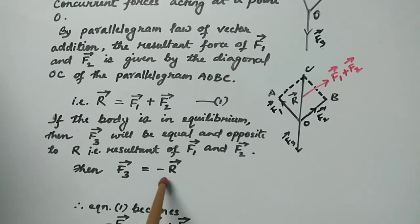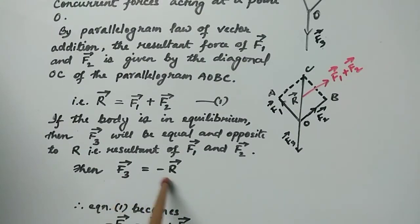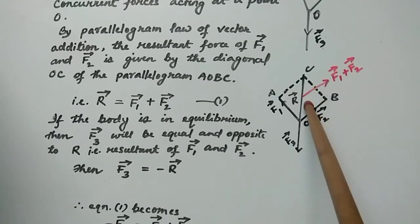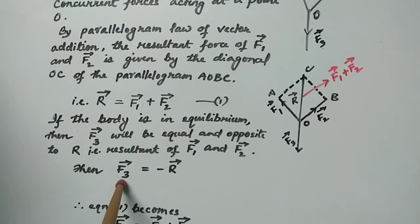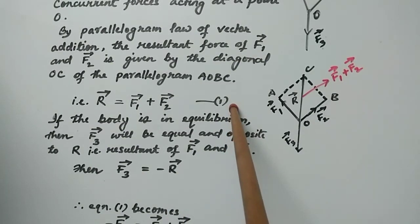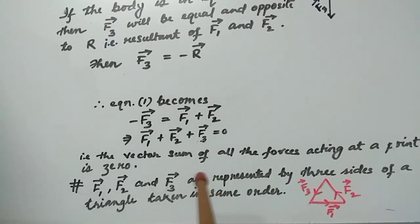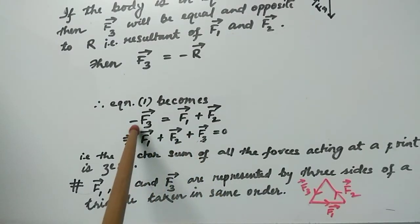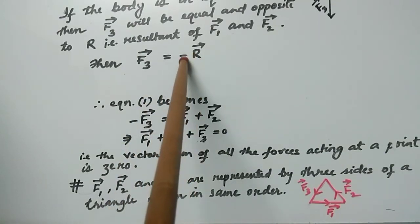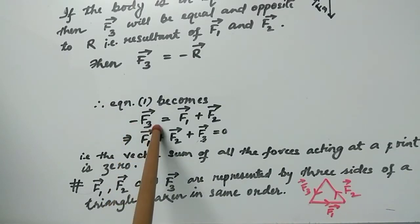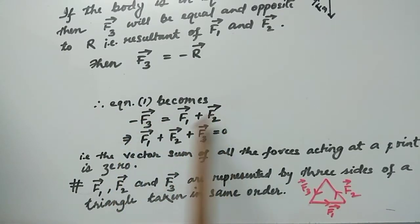Therefore F3 vector equals minus R vector. Substituting equation 1, we get: F1 vector plus F2 vector plus F3 vector equals zero. The magnitude of F3 vector equals the magnitude of R, and F3 vector is equal and opposite to R vector. Thus the equilibrium condition is fulfilled.